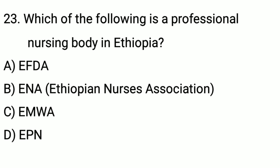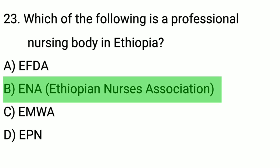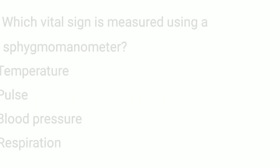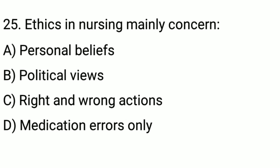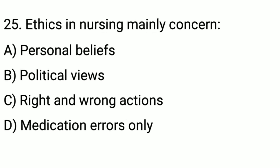Question number 23: Which of the following is a professional nursing body in Ethiopia? The right option is option B: ENA — Ethiopian Nurses Association. Question number 24: Which vital sign is measured using a sphygmomanometer?